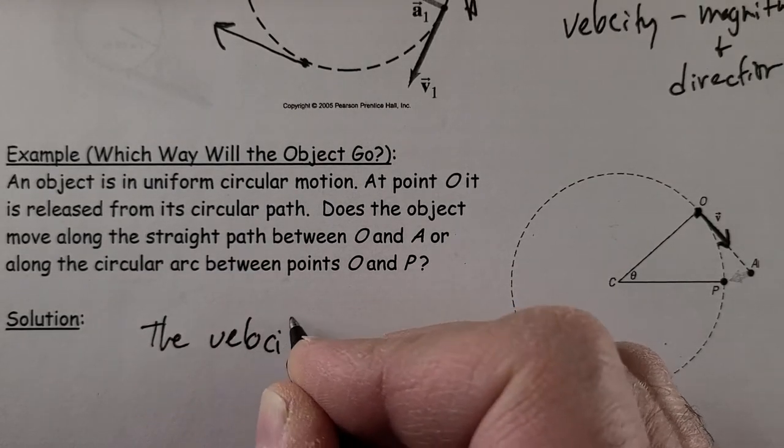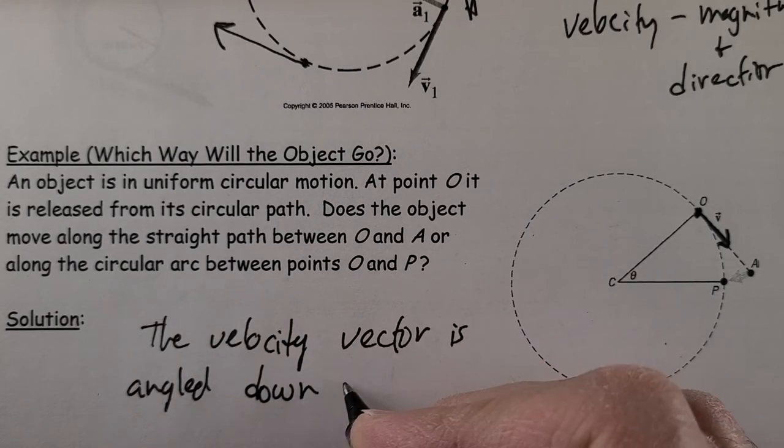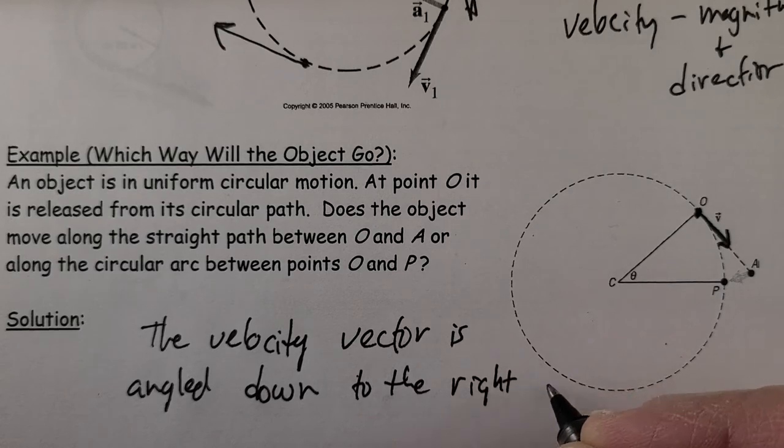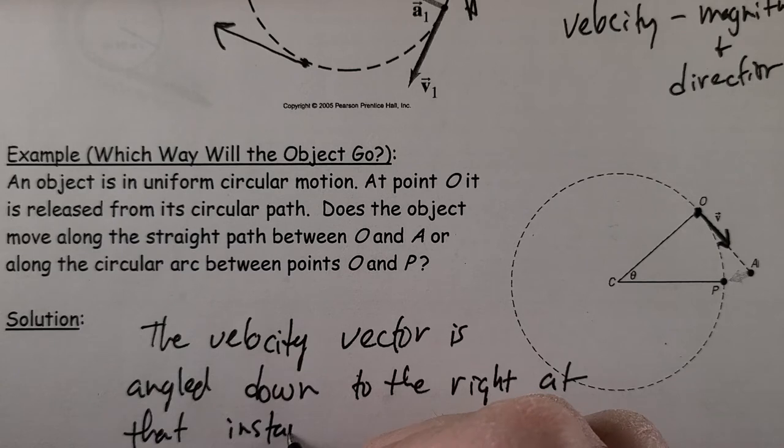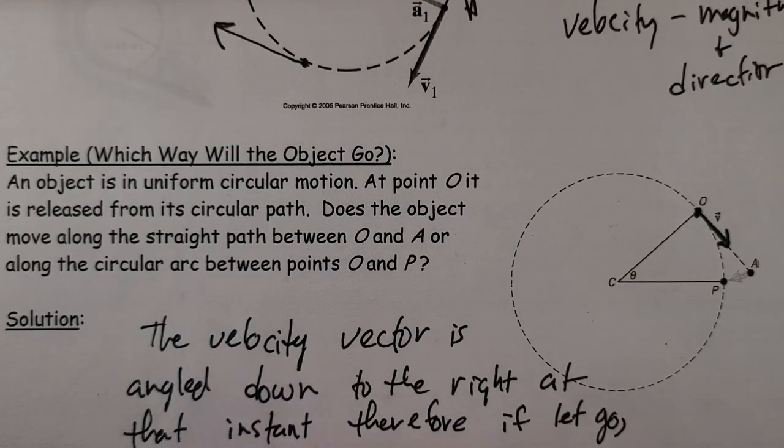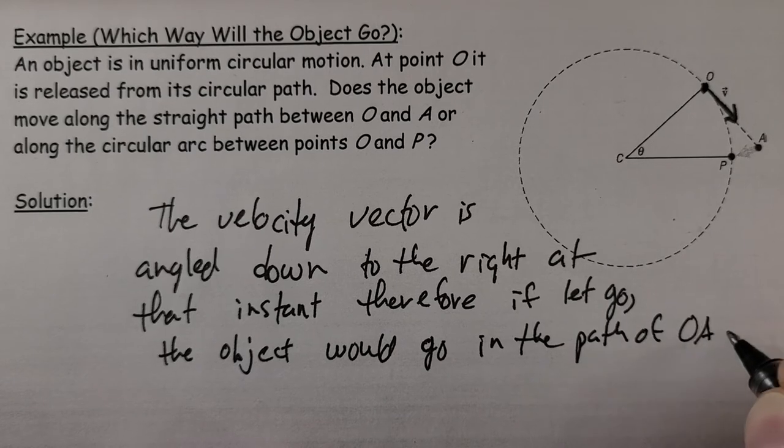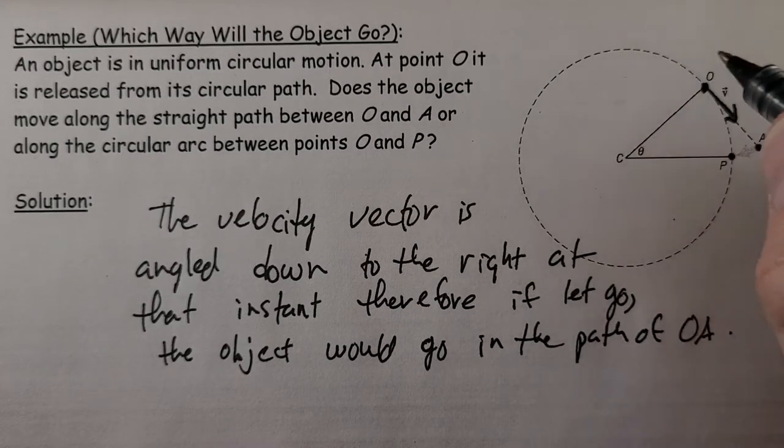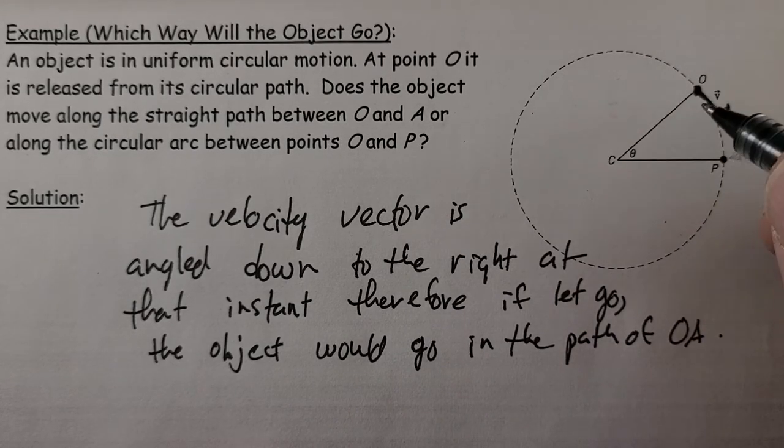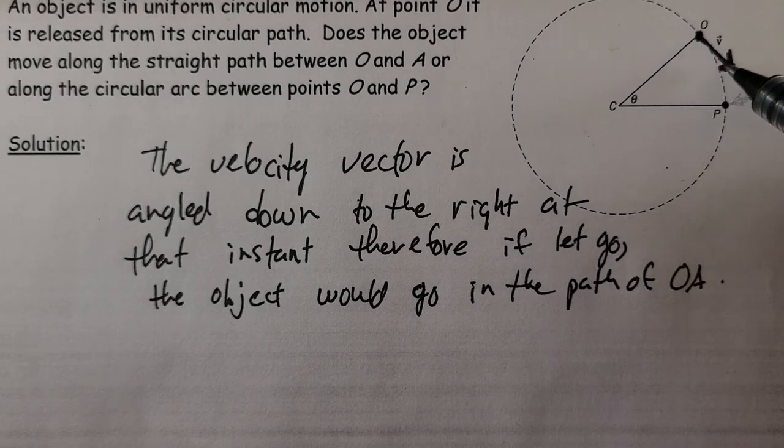The velocity vector is angled down to the right at that instant. Therefore, if let go, the object would go in the path of OA. Because it's a straight line at that particular point going around clockwise. It wants to keep going in that direction if the string snapped, as opposed to wanting to keep in the circle. To keep it in the circle, you have to have that string causing that inward acceleration. But if we don't have that setup, it just goes off tangent to the path.